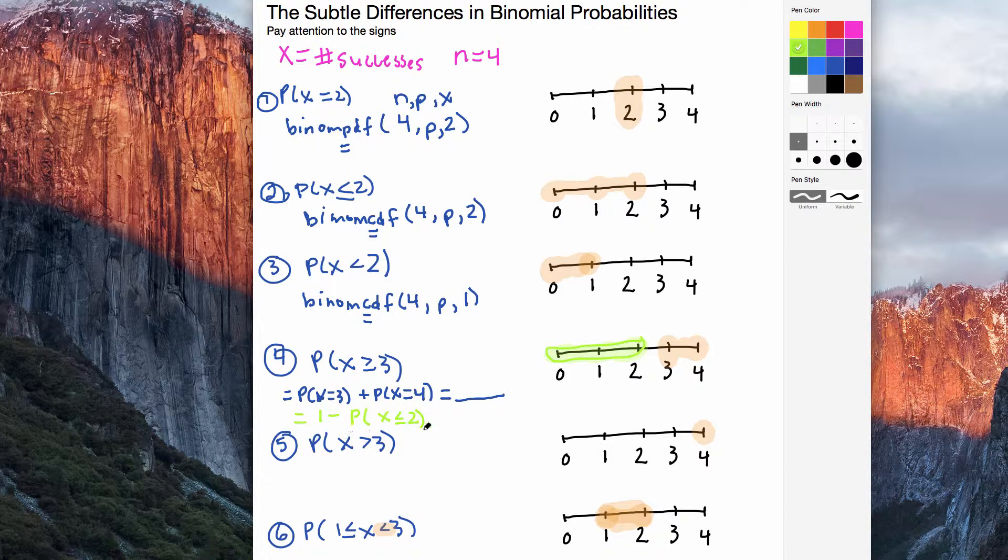So if I find these probabilities of 0, 1, and 2 successes, that's what this little piece right here is showing, subtract it from 1. That gives me the complement, which is the leftovers, which is the 3 and the 4 probability.